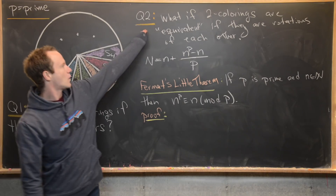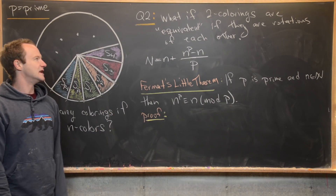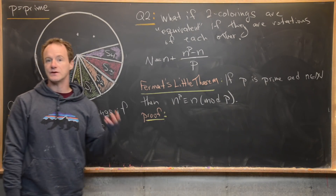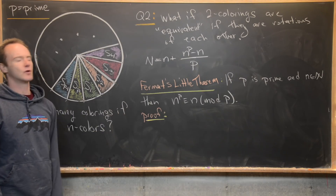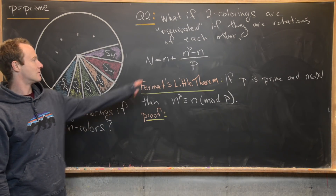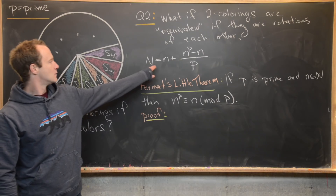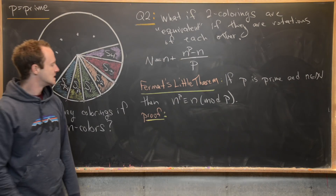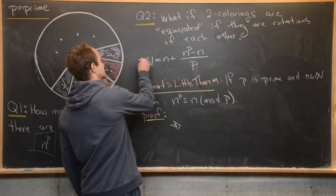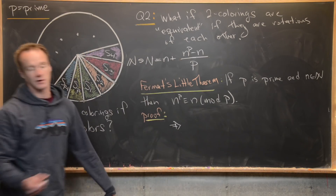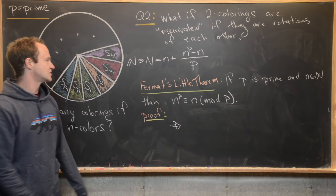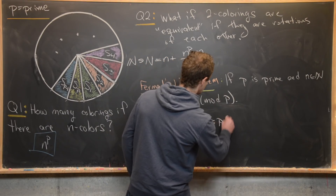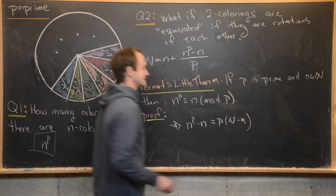In question two, we counted the number of colorings of this circle using N colors under the equivalence condition and found that number equals N plus N to the P minus N, divided by P. This N is a natural number. Rearranging, N to the P minus N equals P times capital N minus little n.